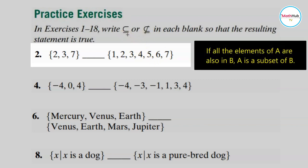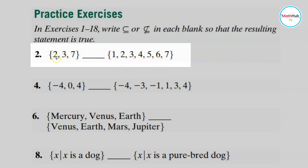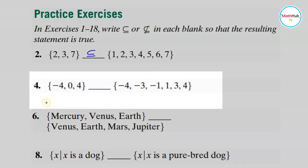What do we mean by subset? A subset means all the elements of the smaller set are also members of the larger set. We have 2, 3, 7 — and 2, 3, 7 are all members of this bigger set here. So therefore we have a subset here.